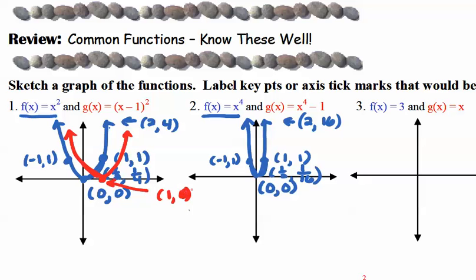And in number 2, we're subtracting 1 outside the function. So first we're raising x to the 4th power, and then we're subtracting 1. So if we took 0 to the 4th and then subtract 1, we'd be at negative 1. If we took 1 to the 4th and then subtracted 1, we'd be at 0. So here it's a vertical shift down 1 unit. Same shape of the graph, the red should look the same as the blue, but 1 unit lower.